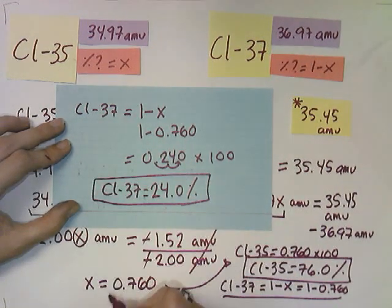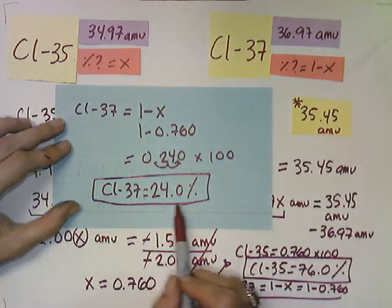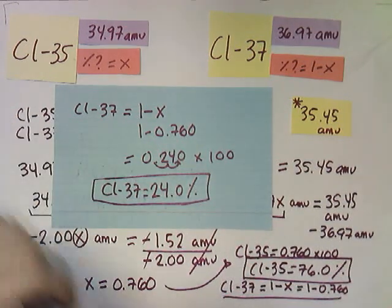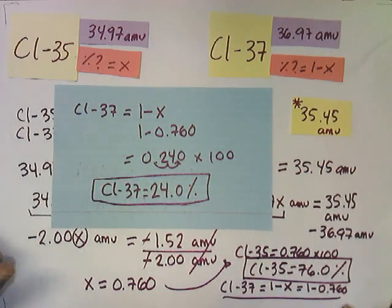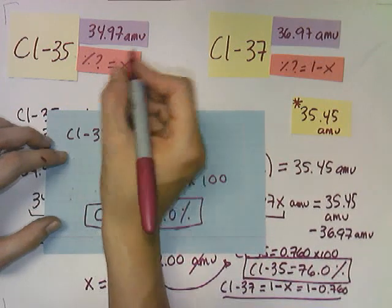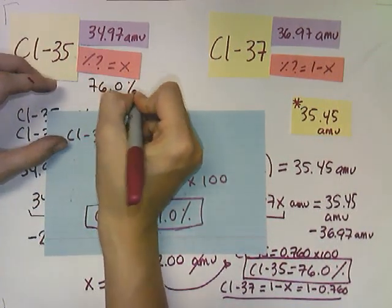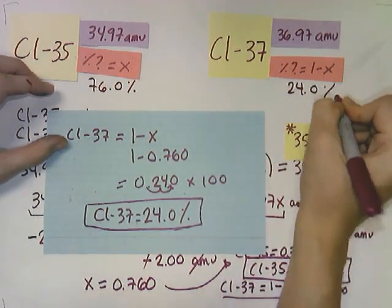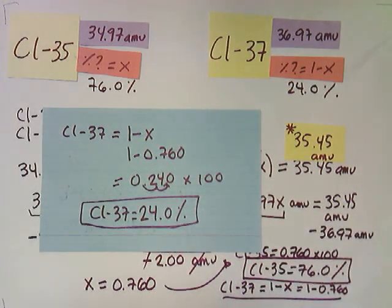So this will be the second answer. So this is the first one right here, 76%. And for the other one, we have 24%. So now that we have both of our answers, we know that chlorine-35 is more abundant than chlorine-37. Now let's just write them right here. So we know that this is 76%. And this one was 24.0%. So that's the isotope abundance for chlorine in this problem.